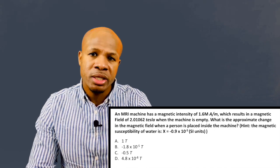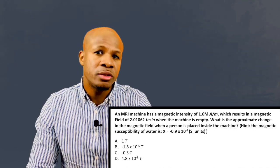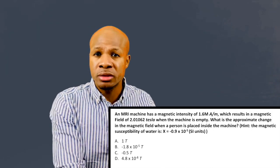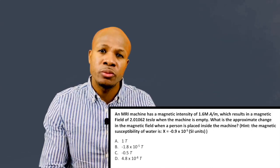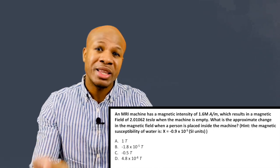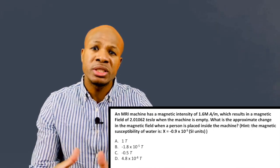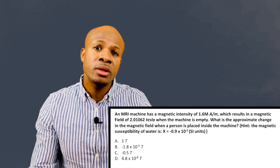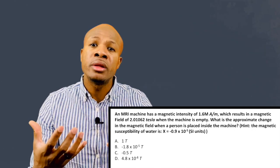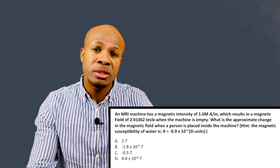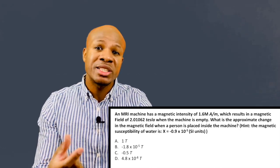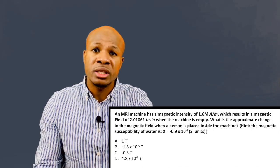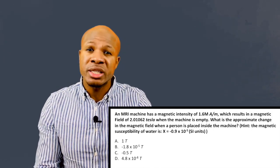So to get the change in the magnetic field, we just need to do the final magnetic field when the body is placed inside the machine and we subtract away the initial magnetic field when the machine was empty. So remember that the magnetic intensity is the ability of the machine to magnetize an object. The magnetic field that results within the machine is dependent on the object that is placed within the machine. So when the machine is empty, it's just a vacuum. So we need to know what is the magnetic susceptibility of a vacuum.